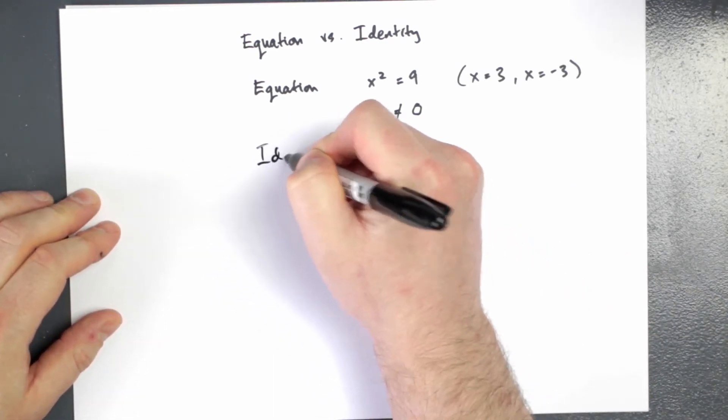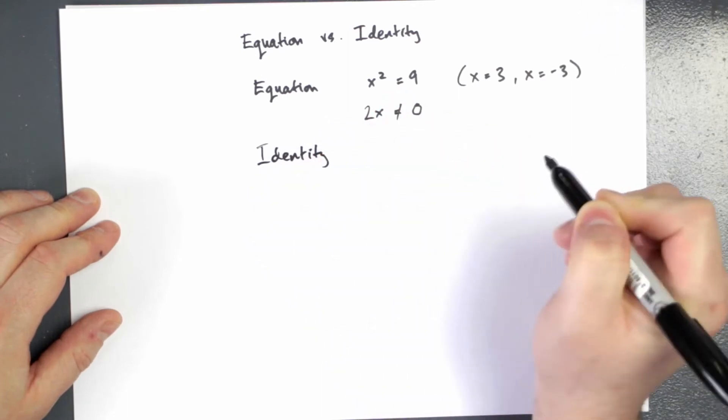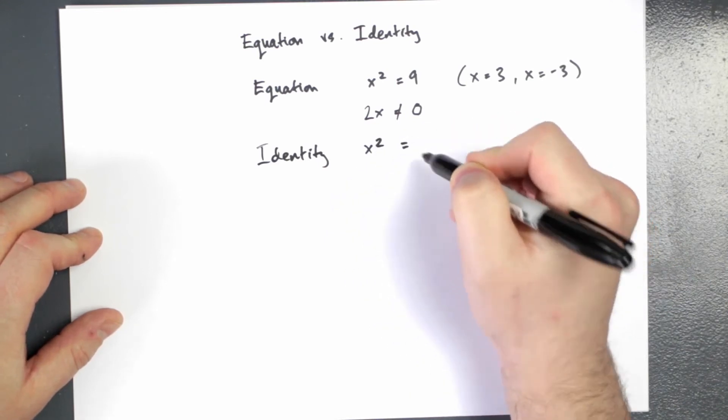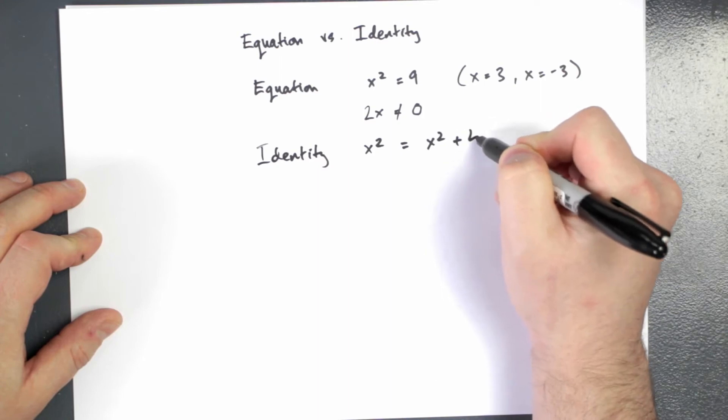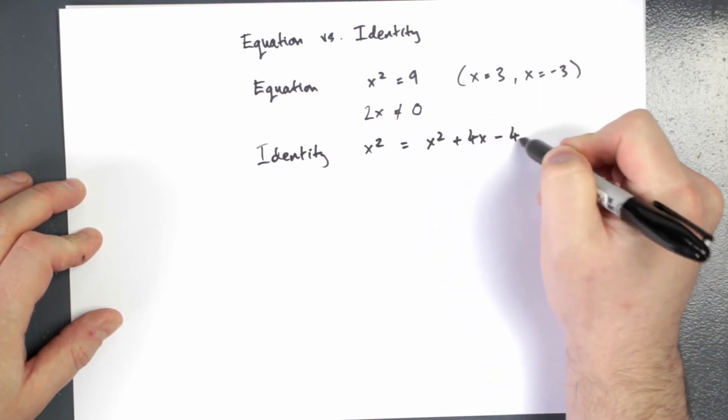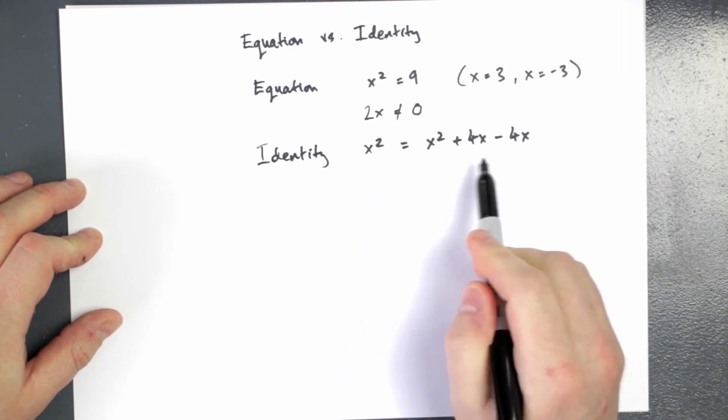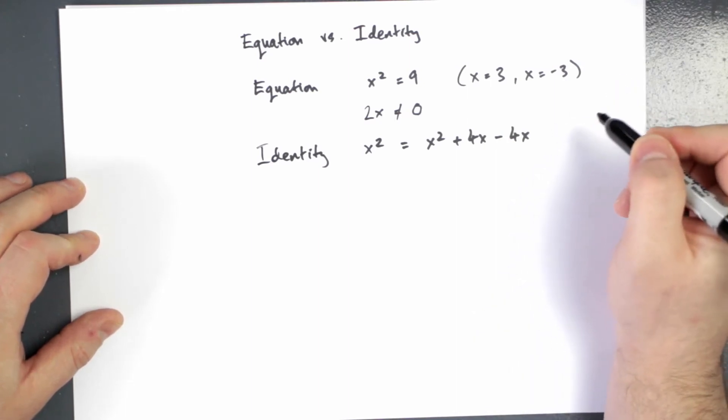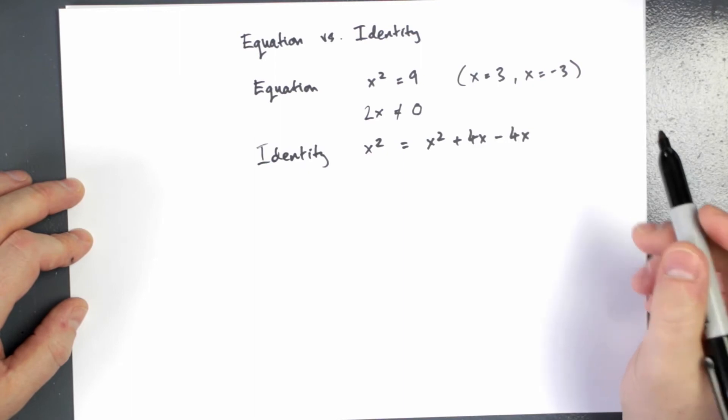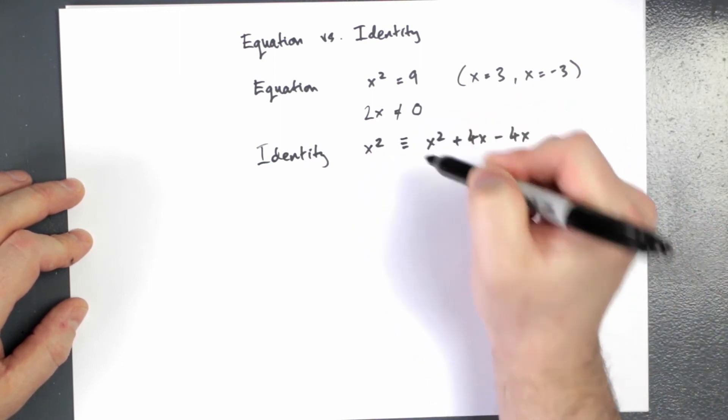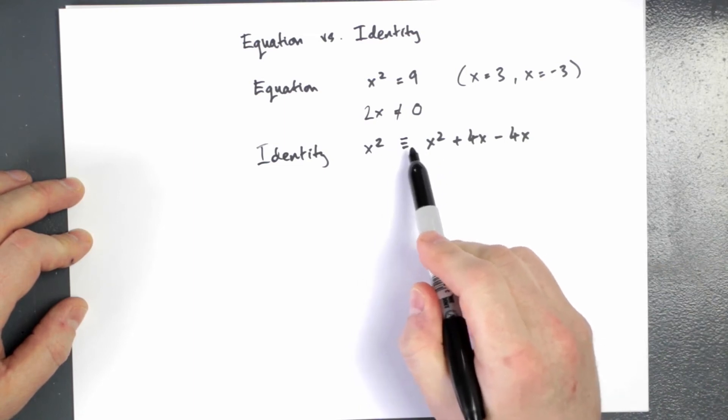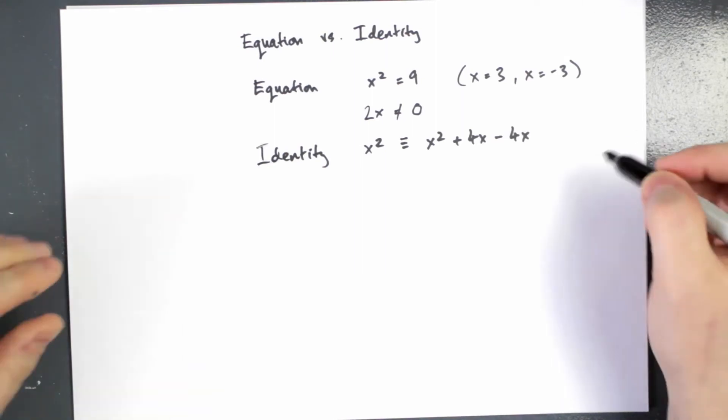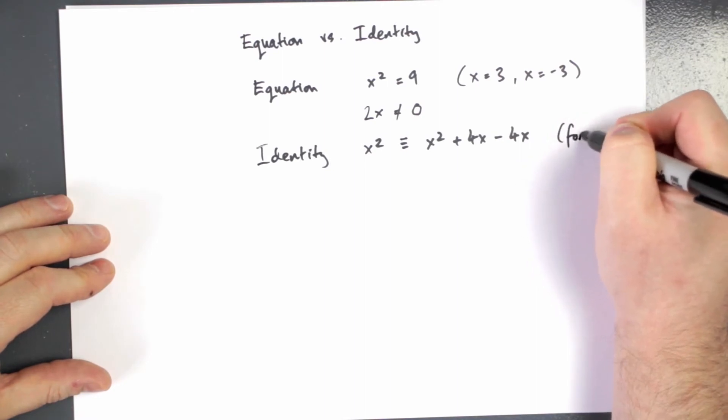However, identities are essentially equations that are true for all x. So let me think of an example. If I said x squared is equal to x squared, and I could add 4 times x and deduct 4x, now here it doesn't matter what value x is. This is just universally true for all values of x. So this is what we mean by an identity. It's like an equation that's true for all values of x. Sometimes it's written with three horizontal lines rather than just two, but very often it's just written as an equation. And then you'll make an annotation, something like for all x.